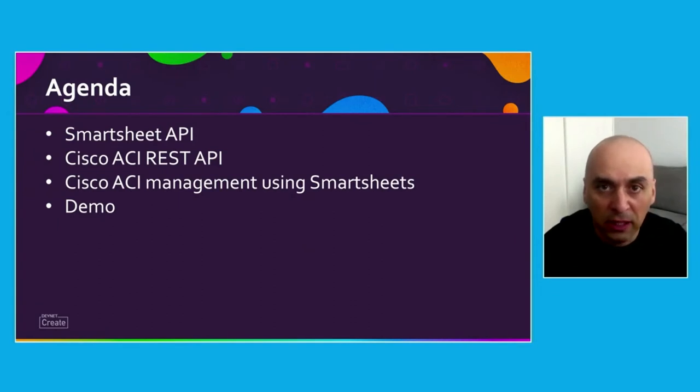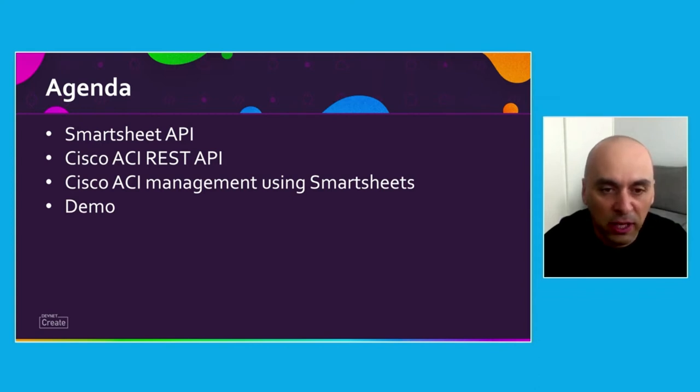So in this session, the agenda is: first, we're going to have a look at the Smartsheet API — we're going to see a couple of slides on that. After that, we're going to move and have a brief look at Cisco ACI REST API. And then we'll bring both of these together and show you the solution we've built on top of Smartsheet and Cisco ACI. Then we're going to wrap up the session with a short demo on how the solution looks and some of the features that it has.